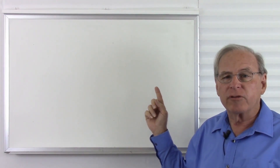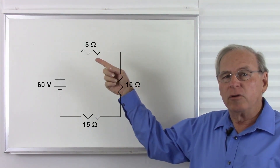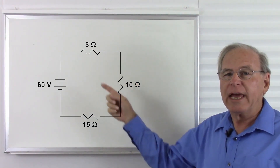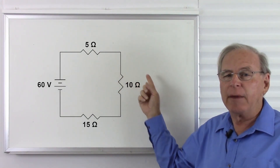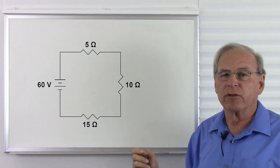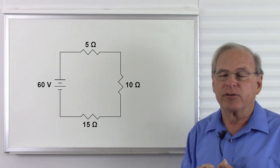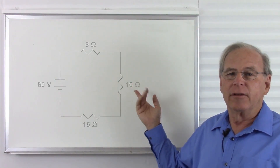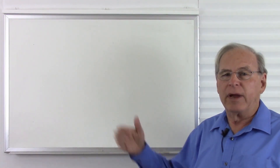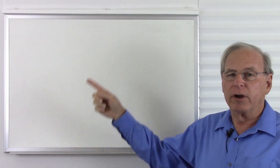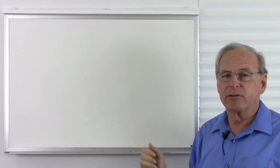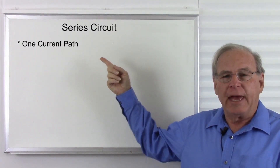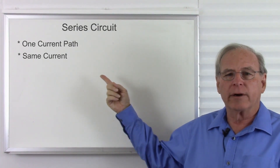So in a series circuit, when we see two amps wherever we are, it's the same two amps no matter where we are in the circuit. An amp is a certain number of electrons per second, just like the race has 33 cars — we have so many electrons per second going around that circuit. In a series circuit, we have one current path, and the current is the same everywhere.